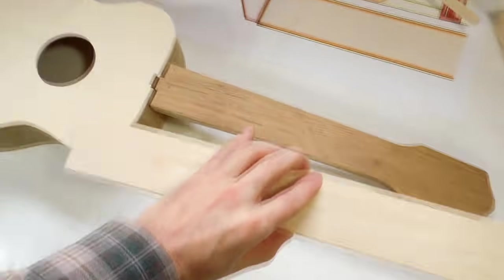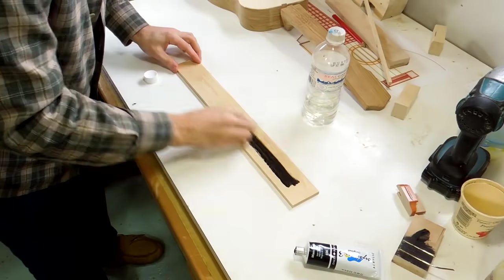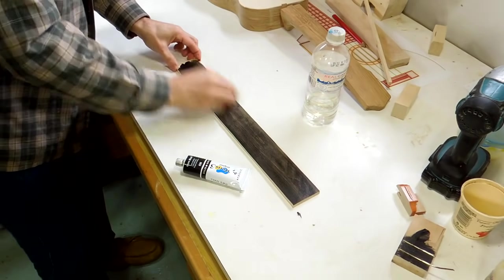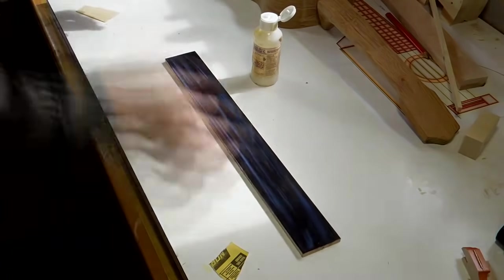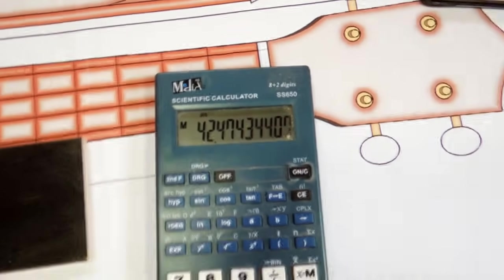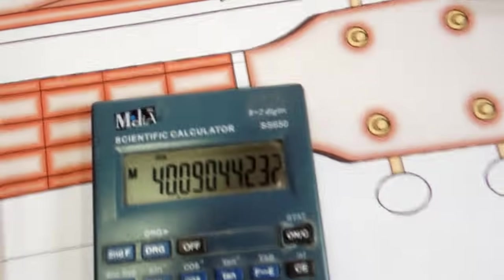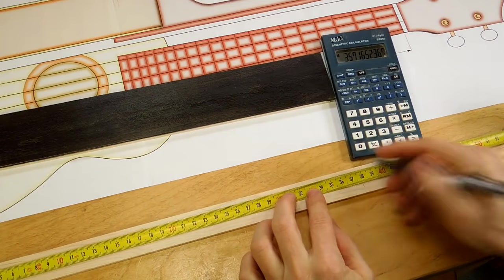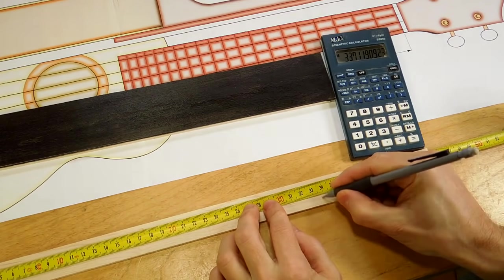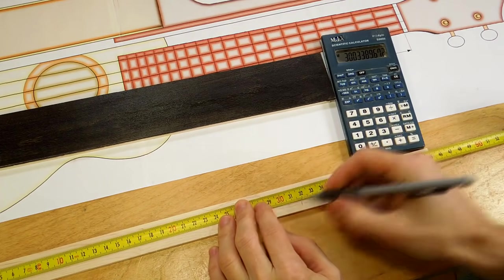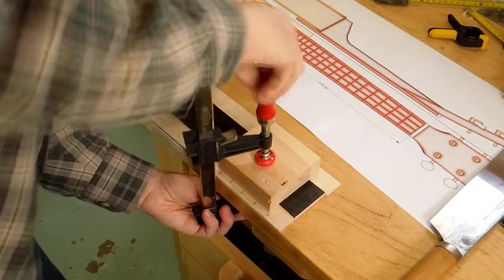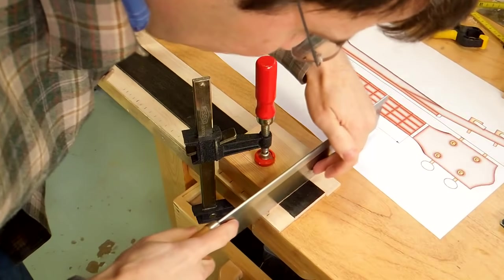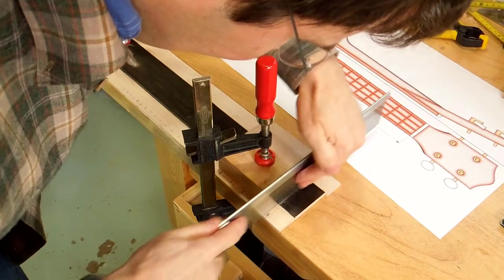So having roughly finished the neck, next I need to make a fretboard. And I'm just painting a piece of maple black because I don't have any ebony. And a coat of varnish on top of the paint. And then working out where the frets go. There are of course fret spacing calculators online. But it's pretty easy to calculate on a calculator just by taking the scale length and keep dividing it by the 12th root of 2. And that gives you the position of every fret.